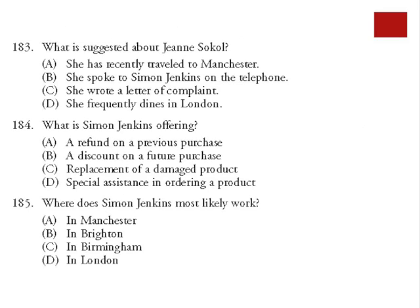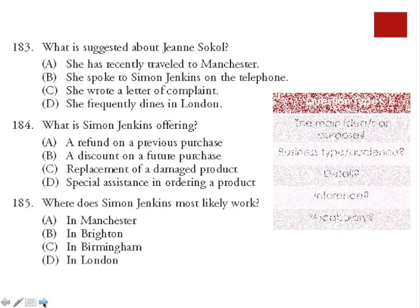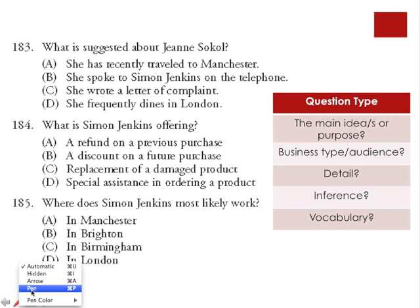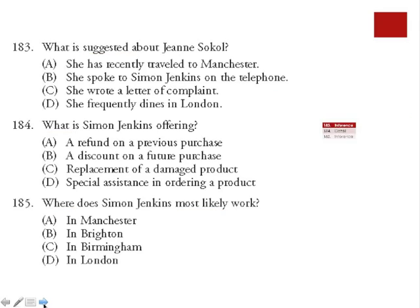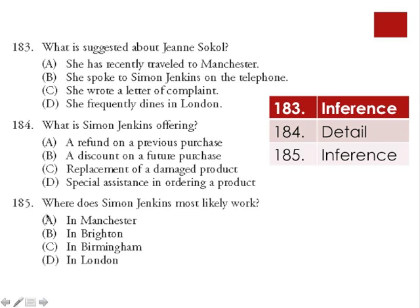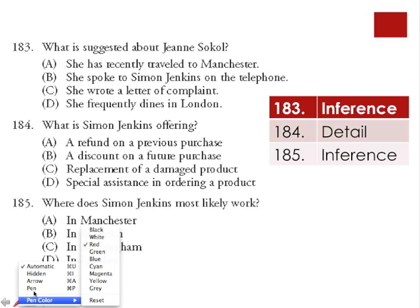Looking at the remaining three questions: 183 asks 'What is suggested about Gene Sokol?' — the word 'suggested' tells us we're inferring something. 184 asks 'What is Simon Jenkins offering?' — the word 'what' tells us we're looking for a specific detail. 185 asks 'Where does Simon Jenkins most likely work?' — the phrase 'most likely' tells us this is also an inference question, something not necessarily directly stated. So questions 183 and 185 ask us to infer something, whereas 184 is most likely a detail question asking us to look for something specific that will be in the text.